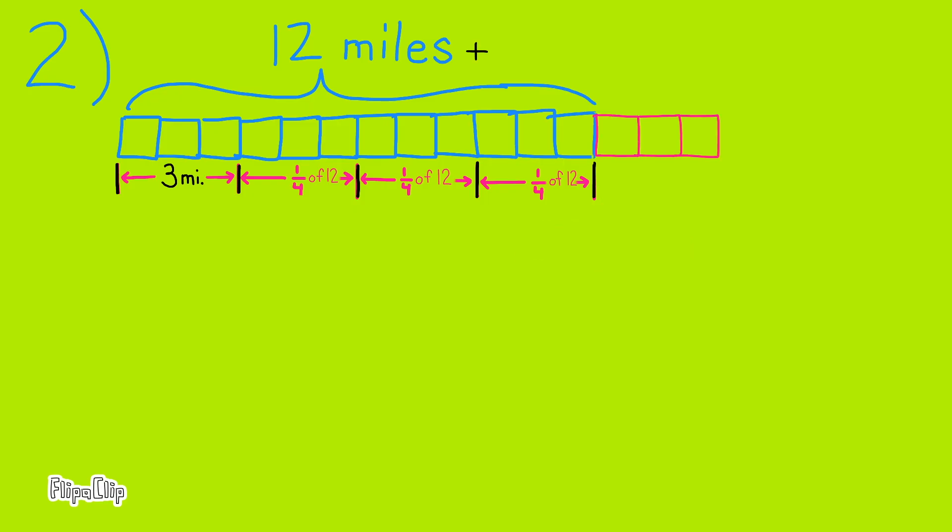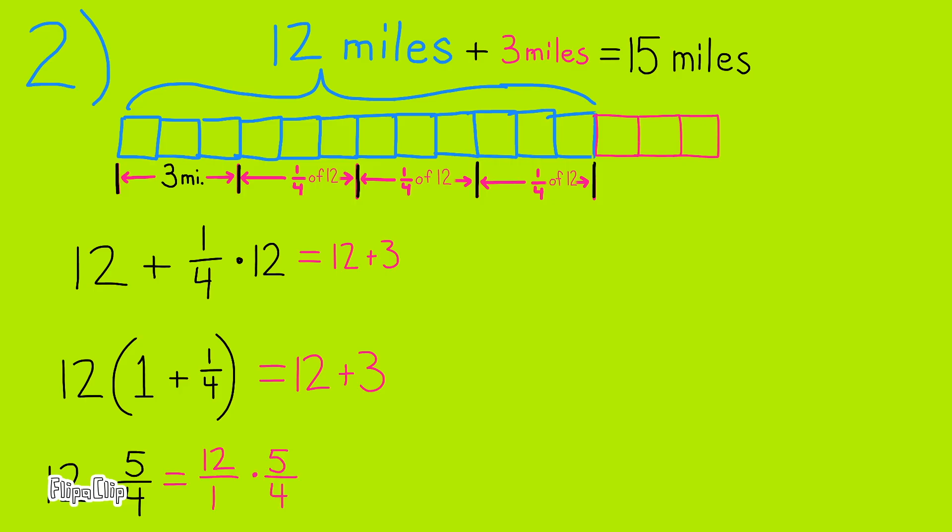12 miles plus 3 miles or 1 fourth of 12 miles equals 15 miles. So 12 plus 1 fourth of 12 and 12 times 1 plus 1 fourth and 12 times 5 fourths. These all equal 15. 12 times 5 fourths equals 15. And 12 times 1 plus 1 fourth equals 15. And 12 plus 1 fourth of 12 also equals 15.